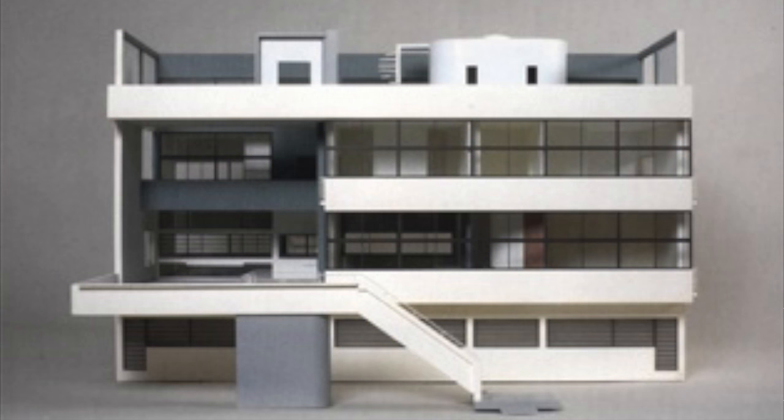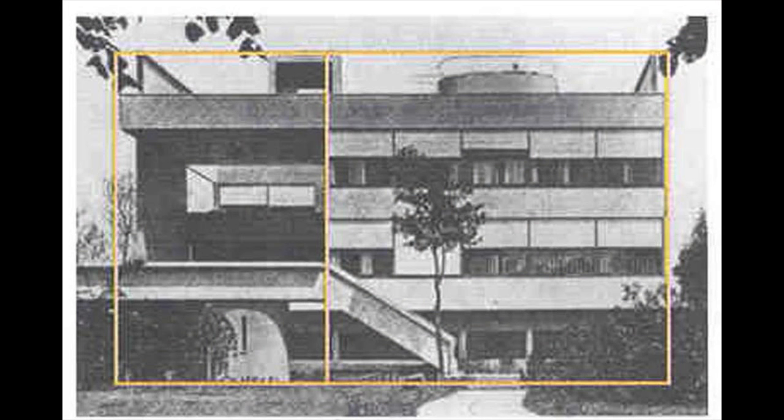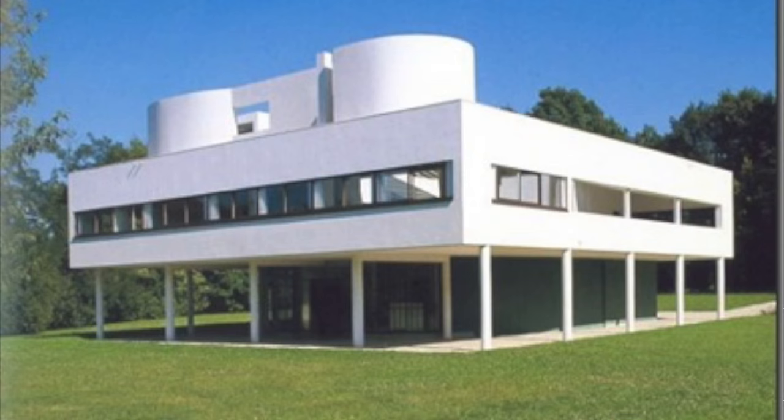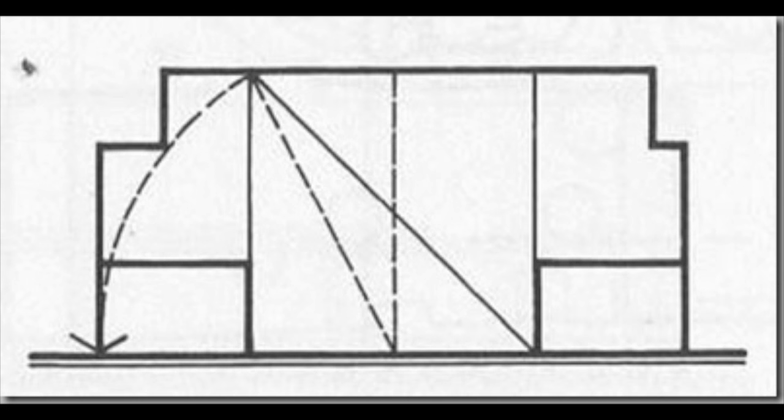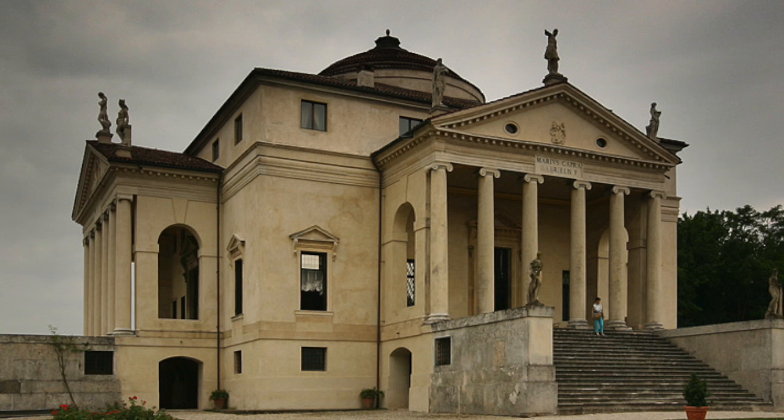The Swiss architect Le Corbusier, famous for his contributions to the modern international style, centered his design philosophy on systems of harmony and proportion. Le Corbusier's faith in the mathematical order of the universe was closely bound to the golden ratio and the Fibonacci series.